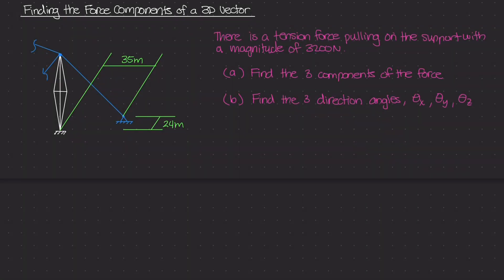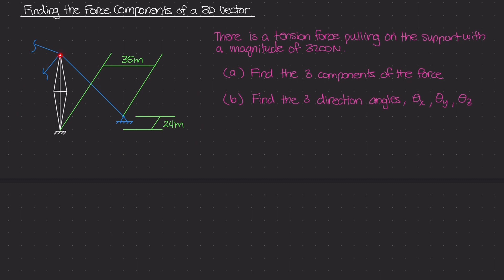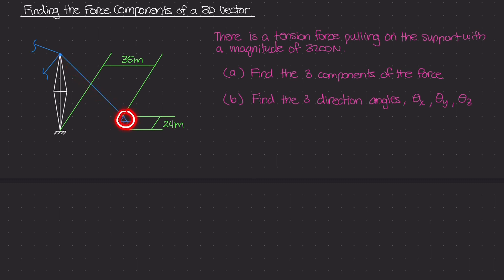In this example, we're going to take what we've learned about 3D forces, our unit vector lambda, direction angles, and direction cosines. We're going to do an example involving this structure — imagine it is some sort of a tower. There are three cables attached to the top of this tower. The main cable we're looking at connects to a small support on the ground, and the problem states there is a tension force of 3200 newtons pulling on this cable.